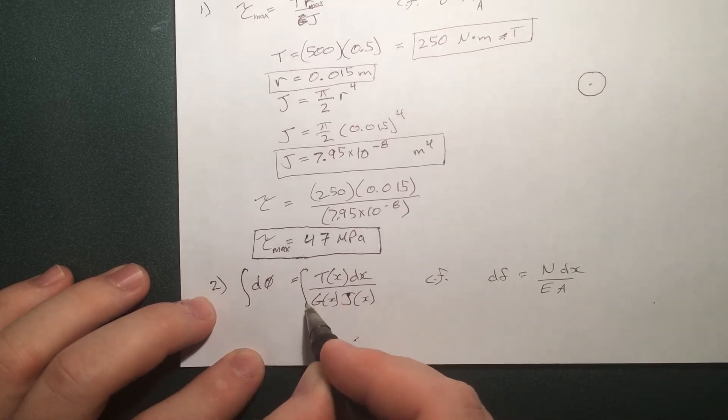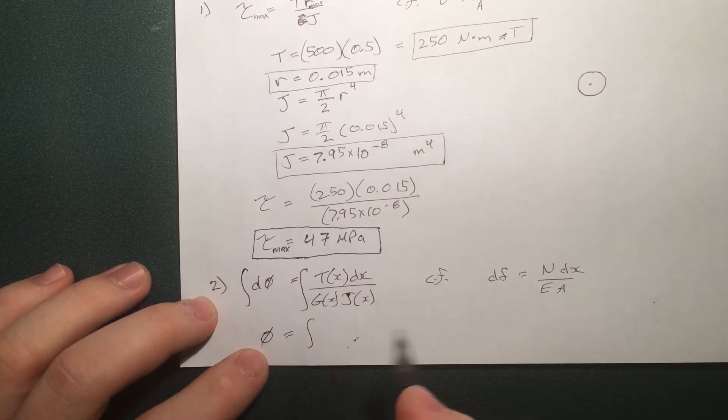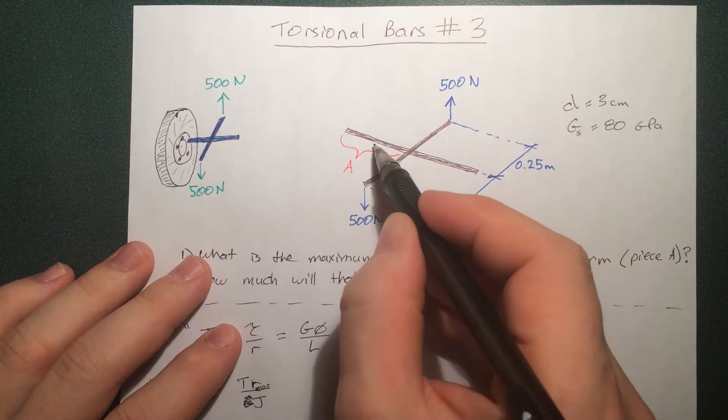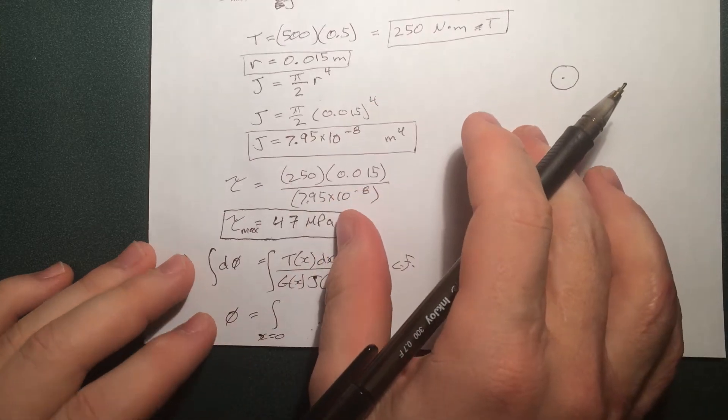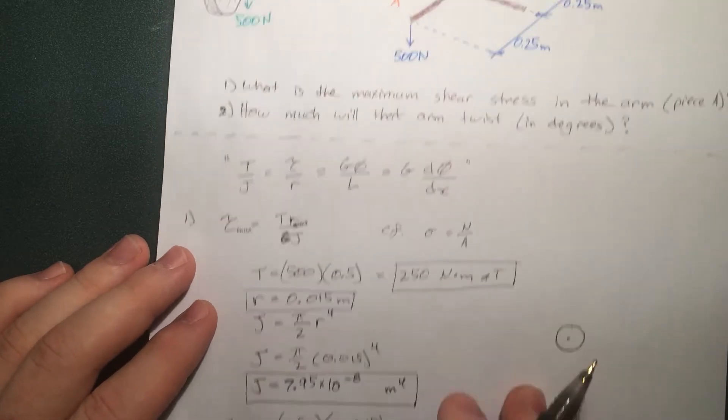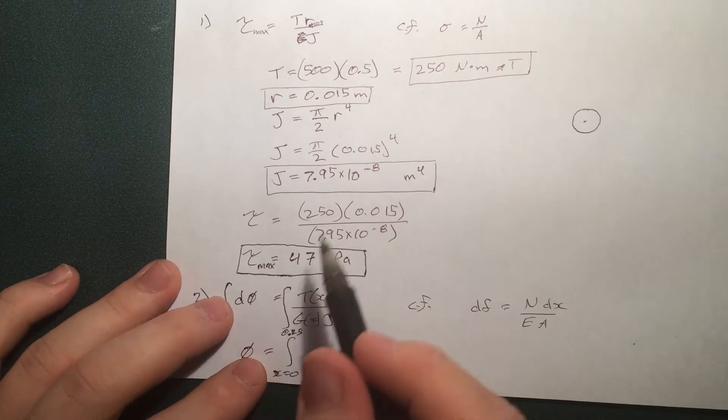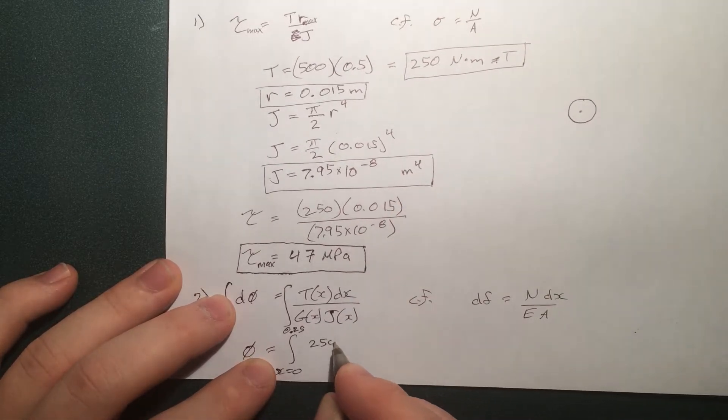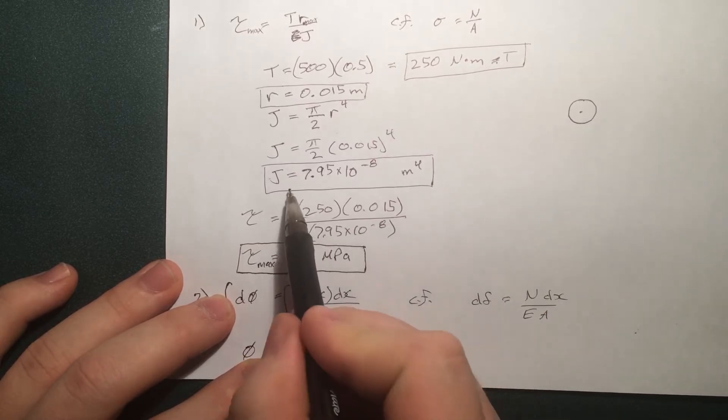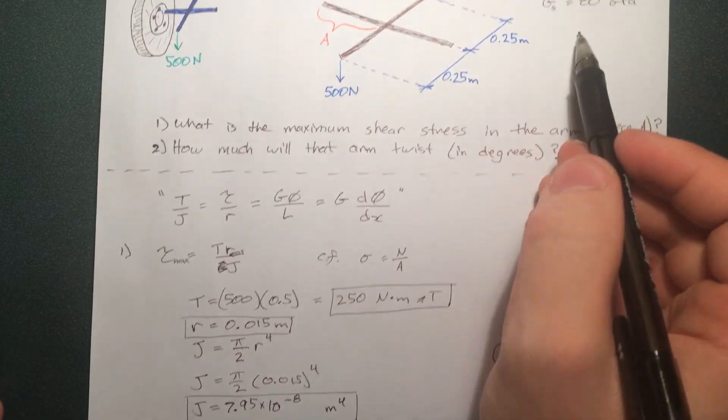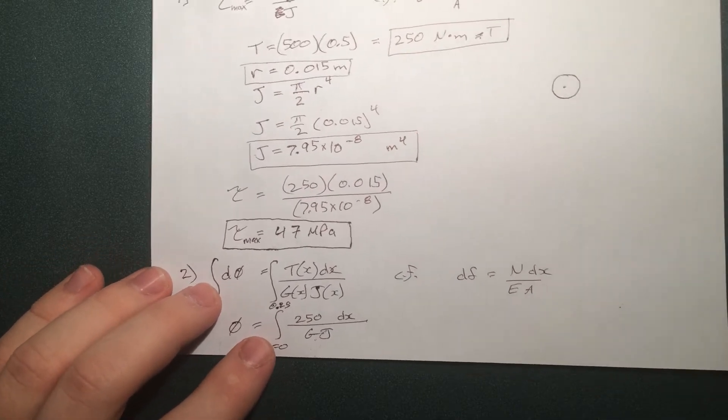Let's go through and solve for phi. We can integrate both sides of this, summing up all the phi's. Therefore, we can say phi is equal to the integral. Now let's define x to start from right here and work its way out. So x equals 0 to the length of that piece, the length of piece A. That's also 0.25. Then T as a function of x. Well, T is constant, so that's just 250 dx over GJ. Those are given here. So moving along, we can just solve for this.